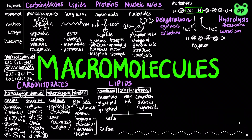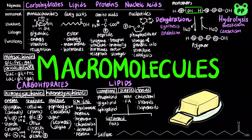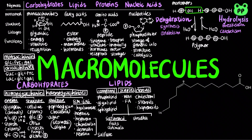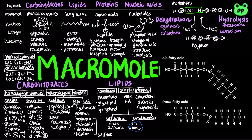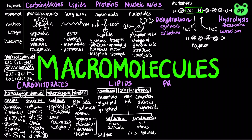Saturated fatty acids have the maximum number of hydrogen atoms possible and no double bonds. Most animal fats are saturated and are solid at room temperature. Unsaturated fatty acids have one or more double bonds; they are found in plants and fish and are usually liquid at room temperature. Natural unsaturated fatty acids usually consist of cis double bonds. The process of hydrogenation converts unsaturated fats to saturated fats, but can also create unsaturated fats with trans double bonds, which may contribute to cardiovascular disease through plaque deposits.